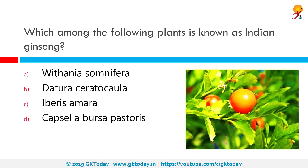Which among the following plants is known as Indian Ginseng? The correct answer is Withania somnifera. Withania somnifera is more commonly known as ashwagandha or winter cherry, sometimes poison gooseberry. It is a plant in the Solanaceae or nightshade family. It is used to reduce levels of fat and sugar in the blood, and is also used as an adaptogen to help the body cope with daily stress and as a general tonic.